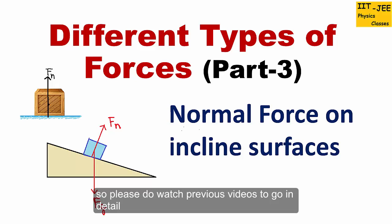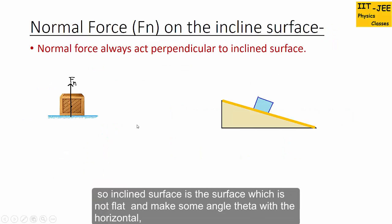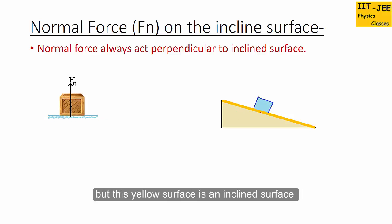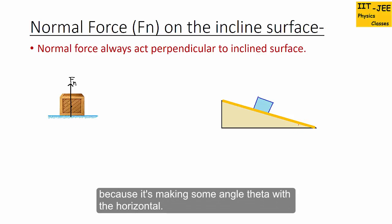An inclined surface is a surface which is not flat and makes some angle theta with the horizontal. This blue surface is the flat surface — it's completely horizontal — but this yellow surface is an inclined surface because it's making some angle theta with the horizontal.